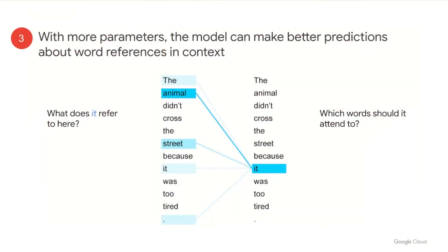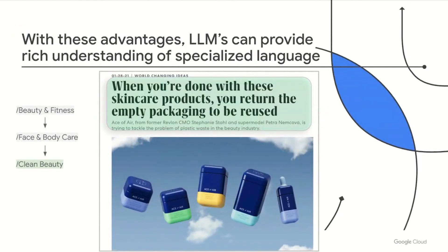Lastly, the model can make better predictions about word references in context. As a simple example, what does "it" refer to? It has learned which words to attend to in order to understand its meaning. And with these advantages, large language models, or LLMs, can provide rich understanding of language — especially when it comes to granular insights required for downstream personalization. In this particular example, there's no explicit reference to "clean" or "environmentally friendly," but it was able to gather enough information to make a good prediction.